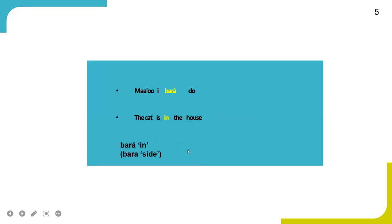My third example means in English that the cat is inside the house. Bara is also a location noun here. It is derived from the common noun Bara, which means 'side.' So Bara tells us where the cat actually is — the cat is in the house.